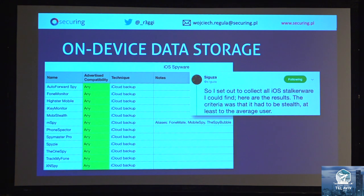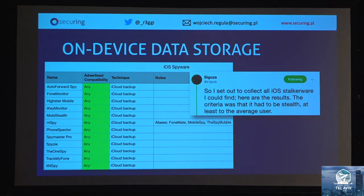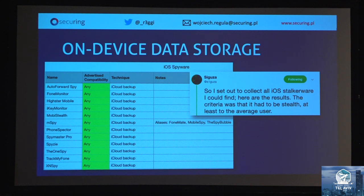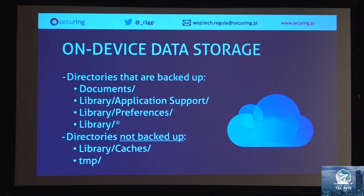SIG user, a famous iOS security researcher, shared research showing different types of spyware on iOS that use iCloud backup as a technique. When developing an iOS application and storing data in files, you need to know which data will be backed up to iCloud. Directories that are backed up include: Documents, Library/Application Support, Library/Preferences, and any other directory in Library except Caches. The temporary directory is not backed up to iCloud.